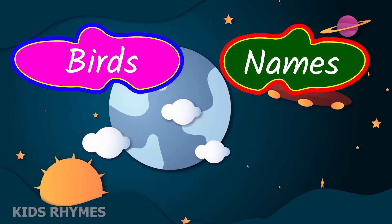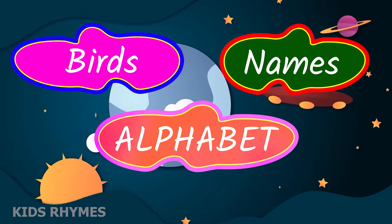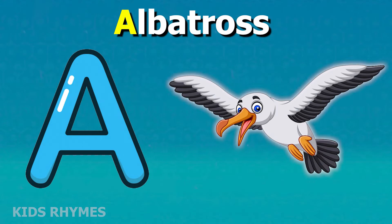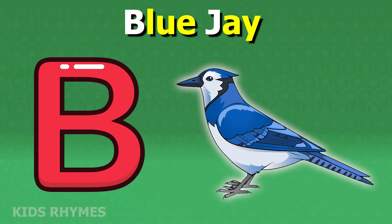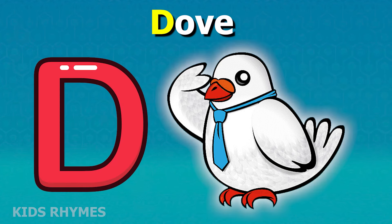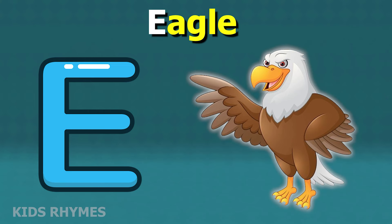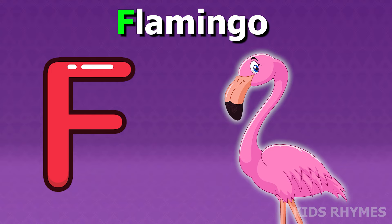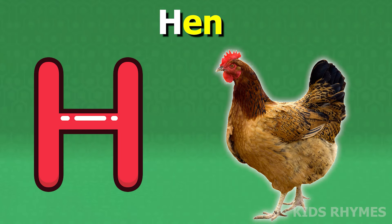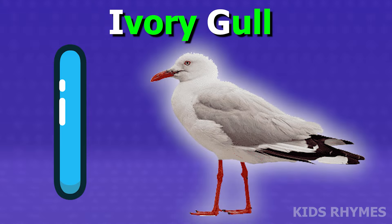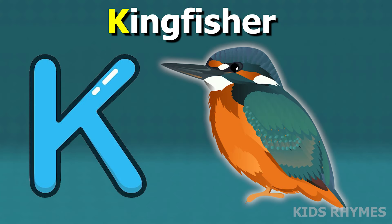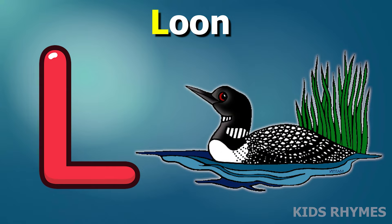Bird's name according to alphabet: A for albatross, B for blue jay, C for crow, D for dove, E for eagle, F for flamingo, G for goose, H for hen, I for nightingale, J for jay, K for kingfisher, L for loon.